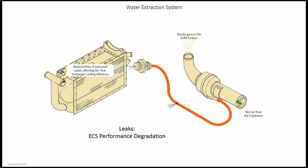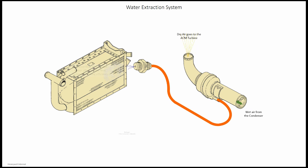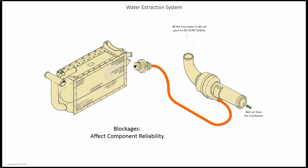A blockage in the water extraction system prevents the extracted water from being removed from the system, allowing it to enter the ACM turbine section where it will turn into ice due to the sub-zero temperatures created by the turbine. It will also affect the evaporative cooling efficiency of the system, elevating the exit temperature of the secondary heat exchanger by as much as 10 degrees, again causing significant performance drop of the ECS.